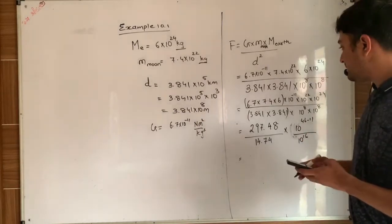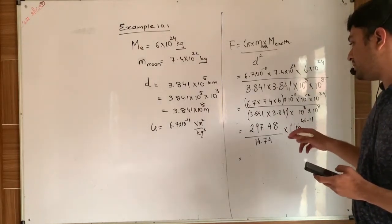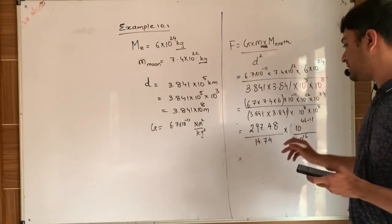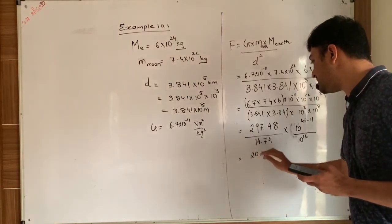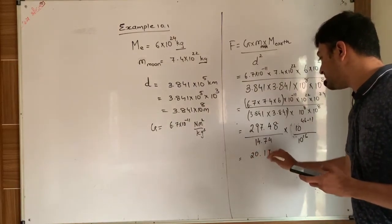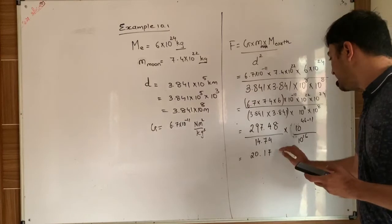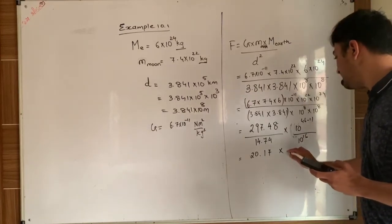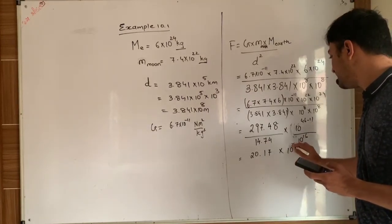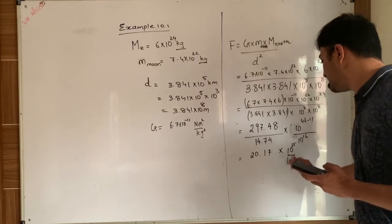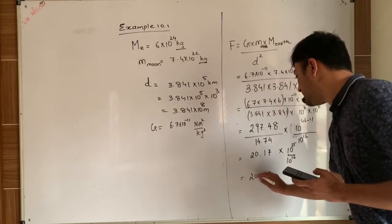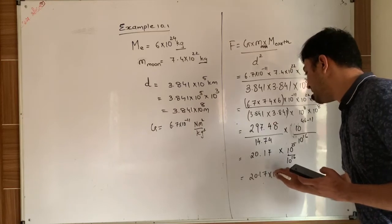So if you just divide 297.48 upon 14.74, then you will have an answer as 20.17. And 35 by 10 raise to 16, that means 20.17 into 10 raise to 19.